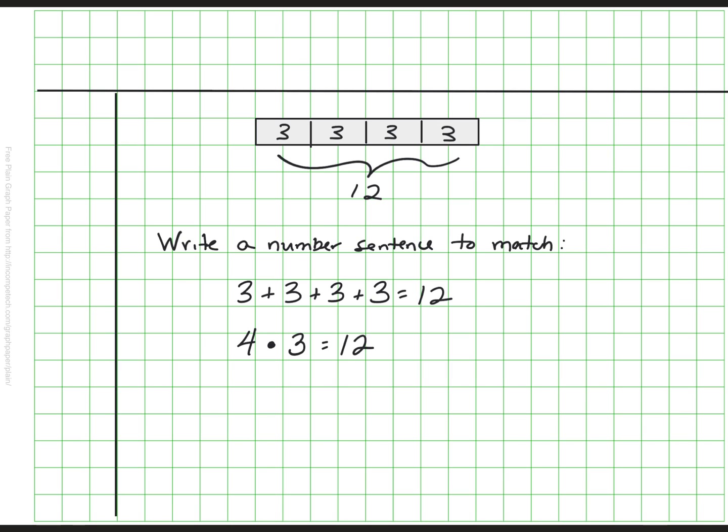The other option, of course, is that I know that there are four groups of three. So I could just do 4·3 and that would be a total of 12 as well. So there are two equations that I was able to write.